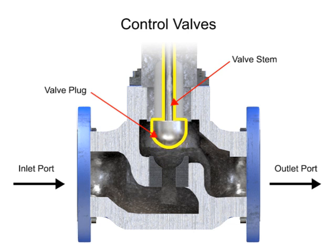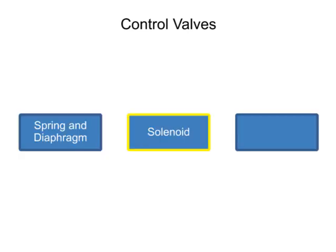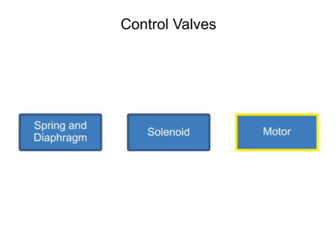Three actuator types are used in control valves, and they include spring and diaphragm, solenoid, and motor.